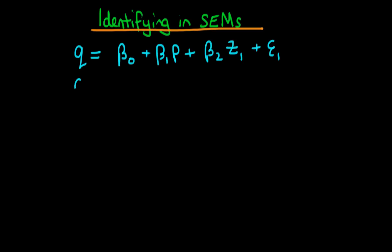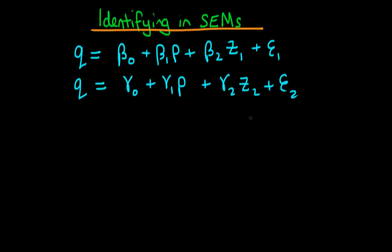We also had a demand equation given by: Q equals gamma naught plus gamma 1 times the price plus gamma 2 times z2, plus some error term epsilon 2. We spoke about the fact that we could actually identify the parameter gamma 1, because there was an exogenous variable z1 which occurs in the first equation but not in the second, so we could use z1 as an IV for P to estimate gamma 1.